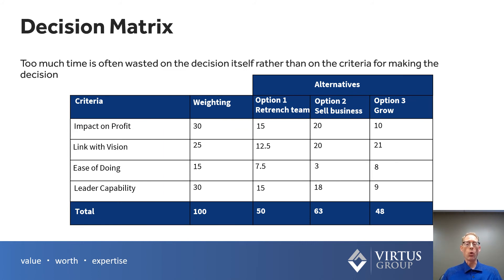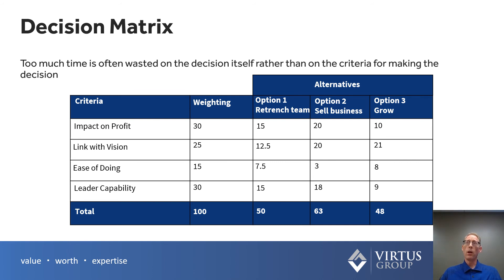We identify criteria that are important in the decision, put a weighting on those, and then evaluate our options. I like this because it moves us past emotion and allows us to weigh the criteria and the options. If we tend to hesitate on making decisions and find ourselves a little indecisive, this tool helps.